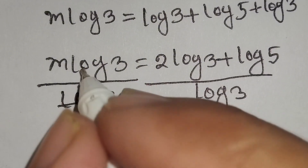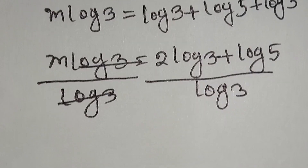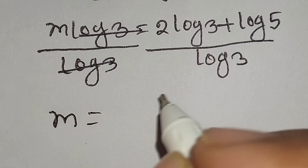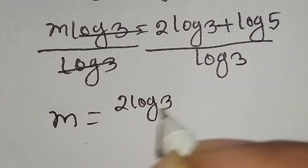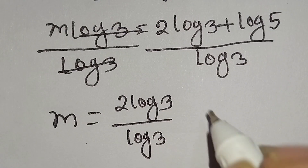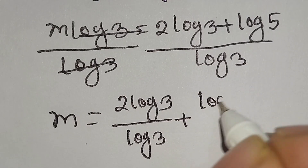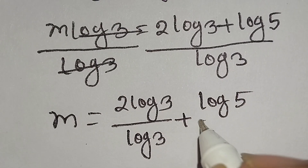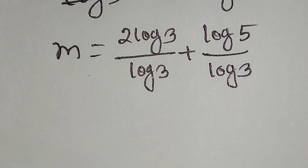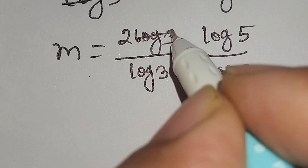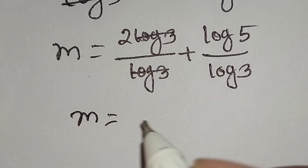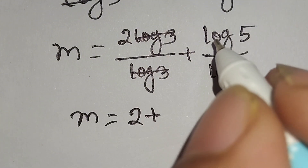This log 3 and this log 3 cancel out. So m is equal to log 3 over log 3 plus log 5 over log 3. The log 3 over log 3 cancels to give 1, so m is equal to 2 plus log 5 over log 3.